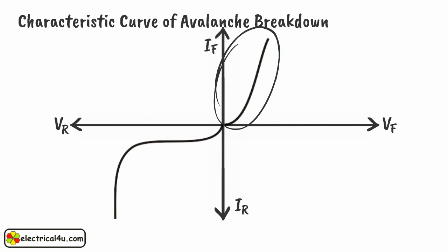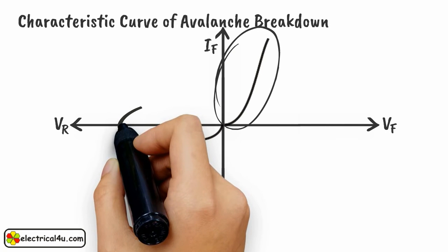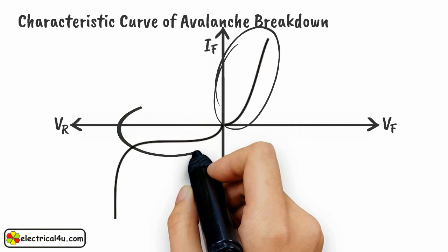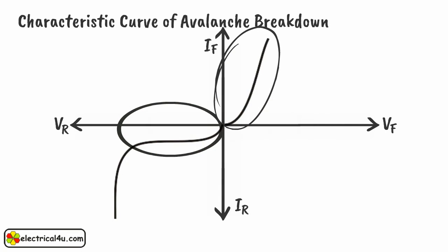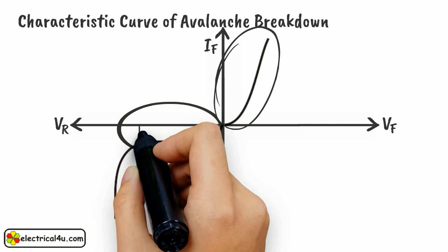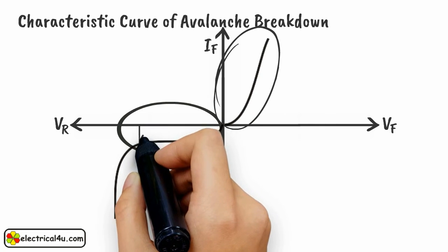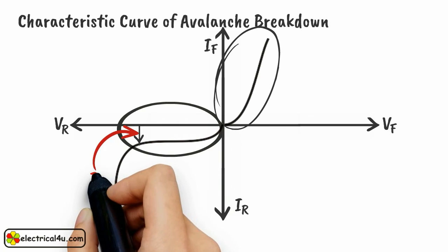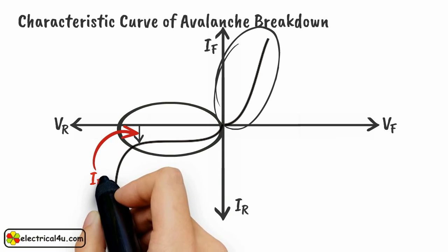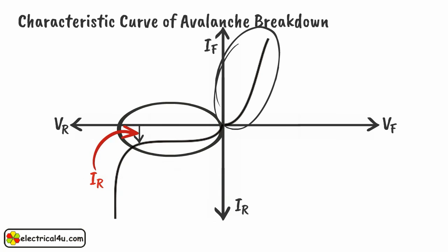It is seen that there will be a certain amount of minimum current flowing through the PN junction under the reverse bias condition. This current is referred to as the reverse saturation current IR.